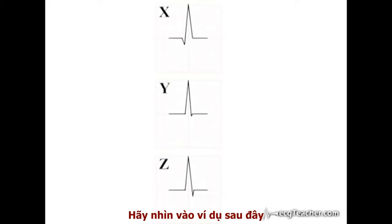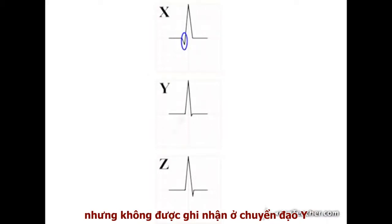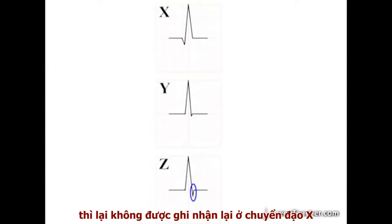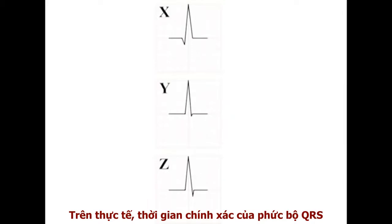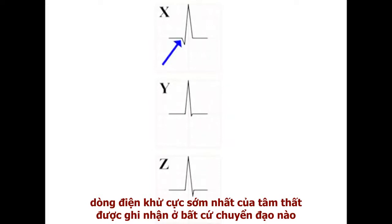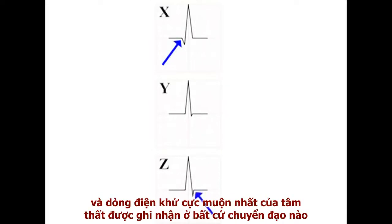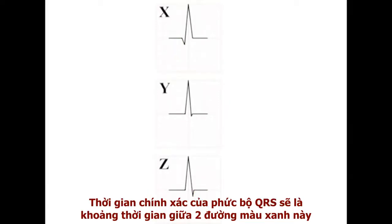Looking at this stylised example with three model leads shown, the current generating this small physiological Q wave in lead X has not been detected by lead Y, while the current generating this small S wave in lead Z has not been detected by lead X. So which readout represents the true QRS duration? In fact, the true QRS duration is represented by the difference in time between the earliest ventricular depolarising current detected in any lead and the latest ventricular depolarising current detected in any lead. So in this simplified example, the true QRS duration is enclosed between the blue lines.